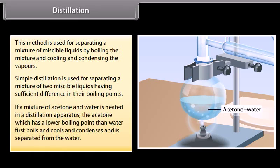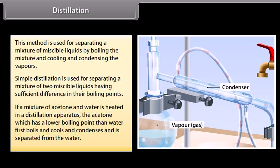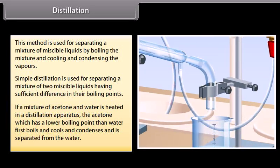If a mixture of acetone and water is heated in a distillation apparatus, the acetone, which has a lower boiling point than water, first boils and cools and condenses and is separated from the water.